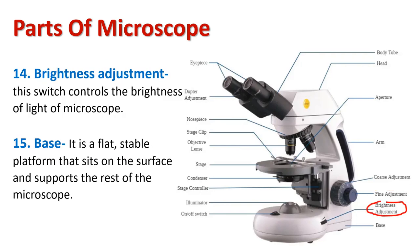The brightness adjustment switch controls the brightness of the light. There are other methods which can also control the brightness of light, such as adjustment of the diaphragm, using the condenser, and by adjusting the eyepiece. The base is a flat, stable platform that sits on the surface and supports the rest of the microscope.